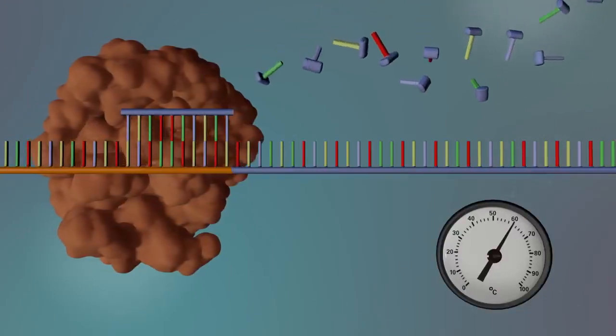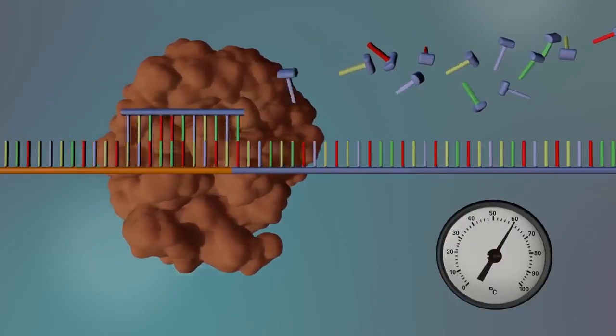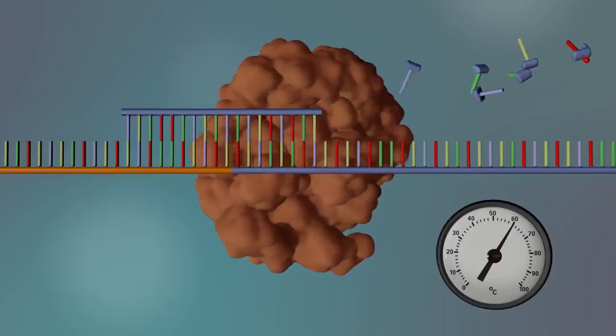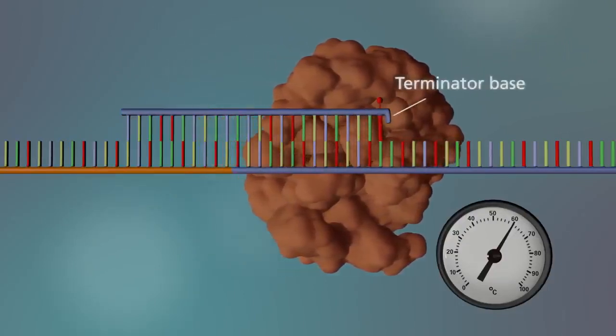DNA polymerase starts making a new strand of DNA by adding unlabeled DNA bases to the target DNA. It continues to add DNA bases until a terminator base is added.